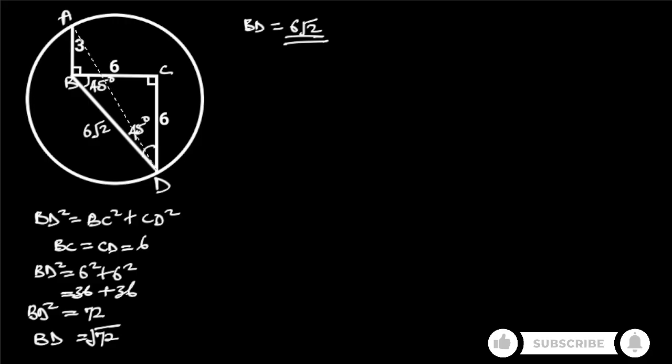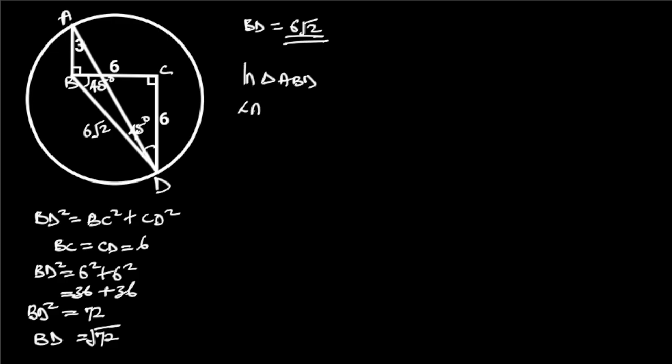Next, let's join A and D with a straight line to form another triangle, ABD. Observe that in triangle ABD, angle ABD is equal to 90 degrees plus 45 degrees, which is equal to 135 degrees.